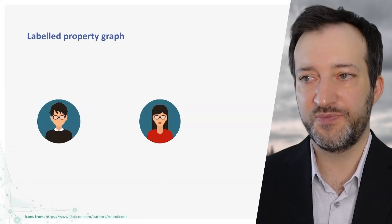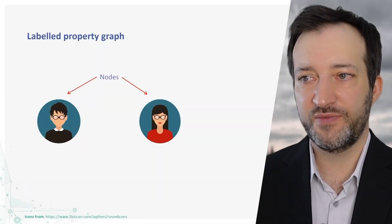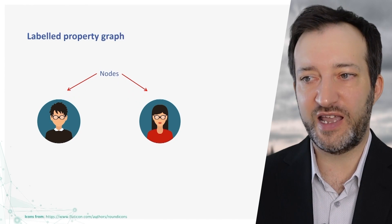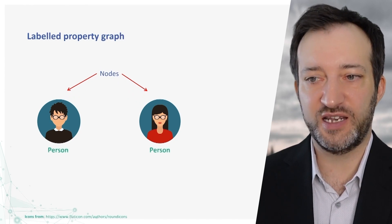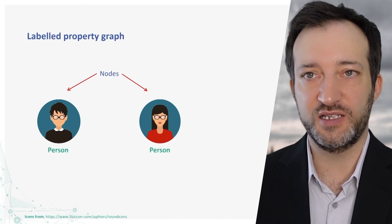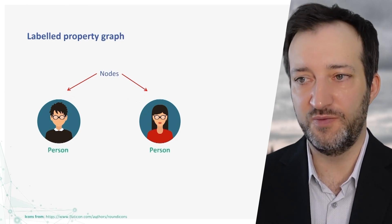So if we had two nodes that represent people, we can provide labels for these nodes. We may choose to label them persons or people.